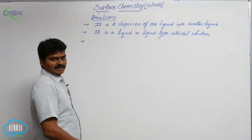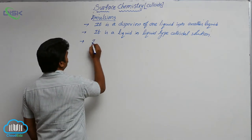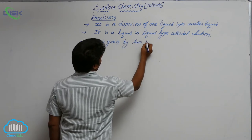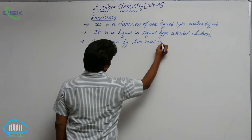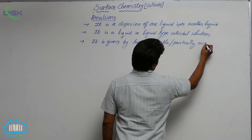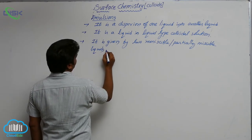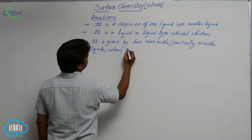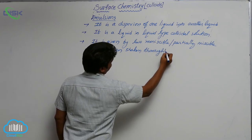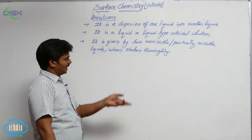In this emulsion concept, it is formed by two immiscible or partially miscible liquids when shaken thoroughly. When two immiscible or partially miscible liquids are shaken thoroughly, an emulsion is formed.